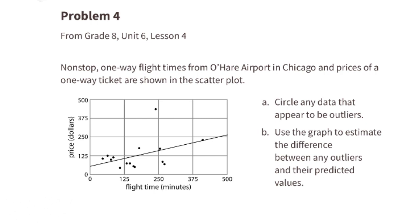Problem number four, from 8th grade unit 6 lesson 4. Non-stop one-way flight times from O'Hare airport in Chicago and prices of a one-way ticket are shown in the scatter plot. Part A: circle any data that appear to be outliers. I'll circle this one obvious outlier.